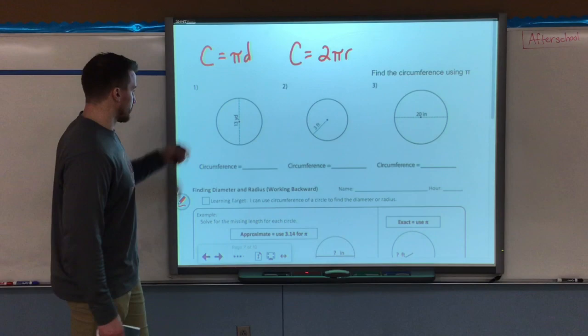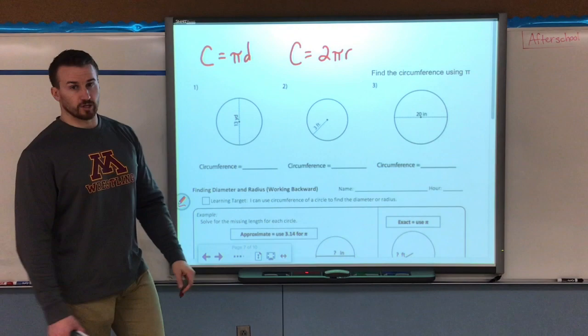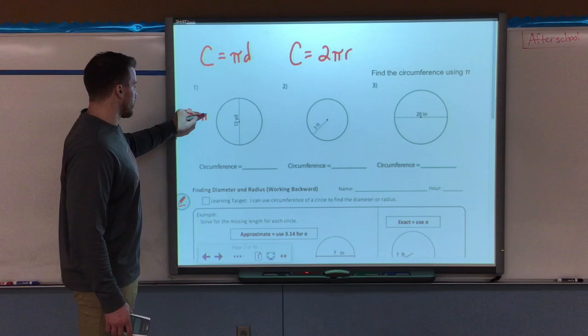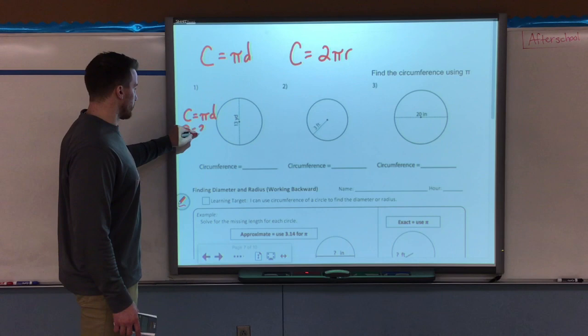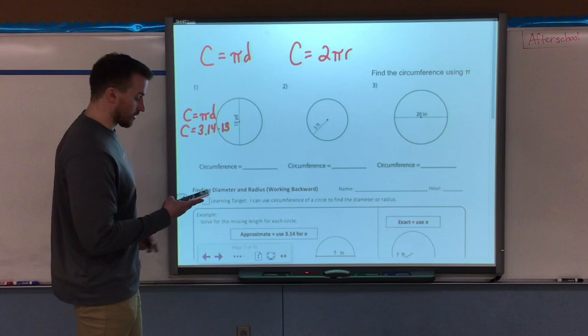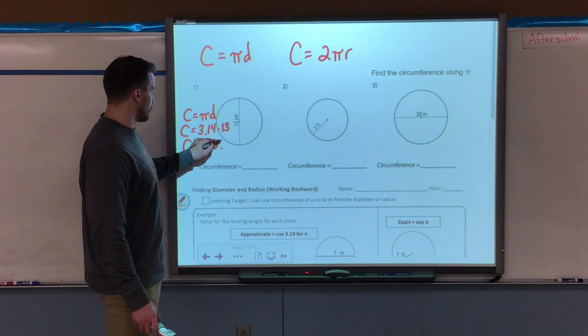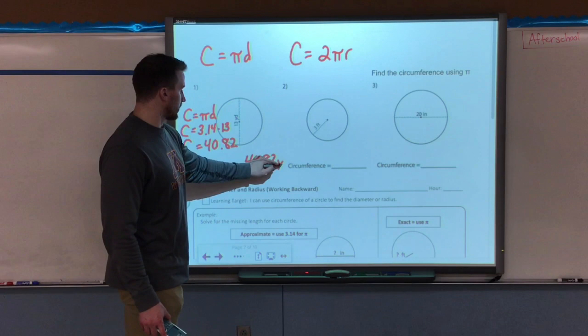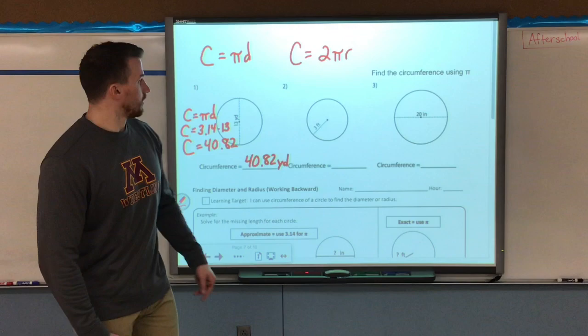Example one: I have a diameter of 13 yards, I need to find the circumference. So I'm going to use the circumference formula that has diameter in it: C equals pi times diameter. Second step after I write my formula is to substitute the values. I'm going to use 3.14 for pi times the diameter, which is 13. Final step, punch it in on your calculators to find the correct circumference, which would be 40.82. So my circumference is 40.82 yards. Don't forget to label it because it could be inches, feet, miles, yards.